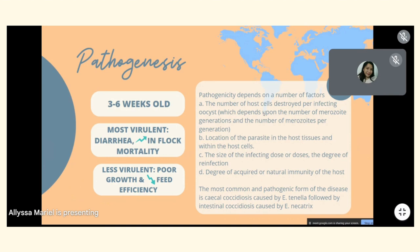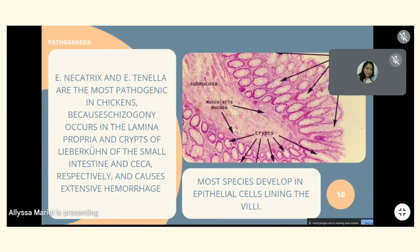The most common and pathogenic form of disease is cecal coccidiosis caused by E. tenella, followed by intestinal coccidiosis caused by E. necatrix. E. necatrix and E. tenella are the most pathogenic in chickens because schizogony occurs in the lamina propria and crypts of Lieberkühn of the small intestine and ceca respectively, causing extensive hemorrhage. Most other species develop in epithelial cells lining the villi.